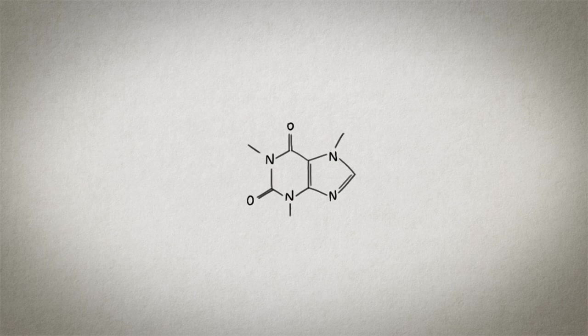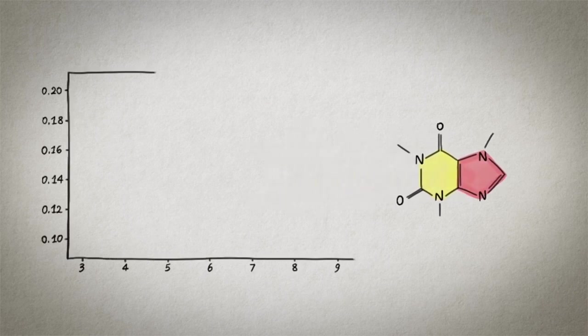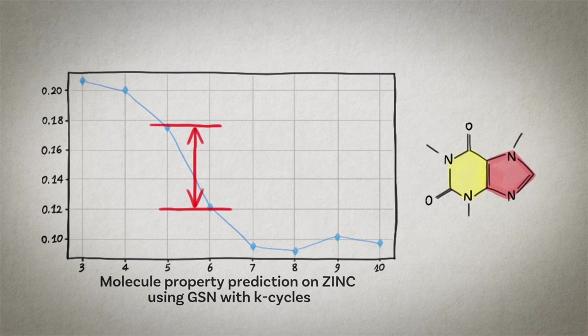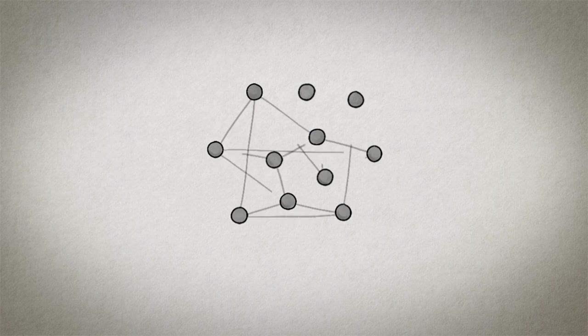For example in molecular graphs cycles are prominent structures. In organic chemistry we have an abundance of what is called aromatic rings and here again you can see the caffeine molecule that has a 6 and a 5 cycle. What we observe in experiments with this architecture is that our ability to predict chemical properties of molecules improves dramatically if we count rings of size 5 or more.